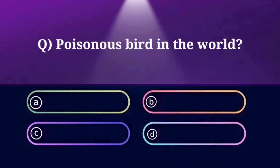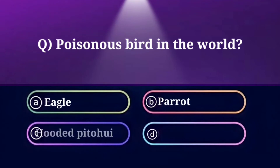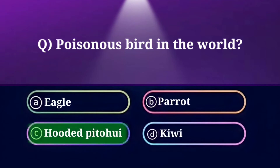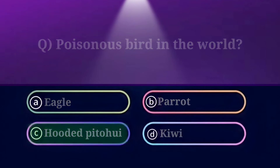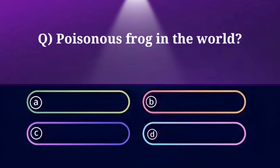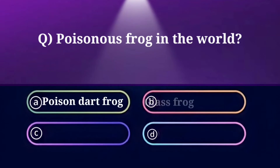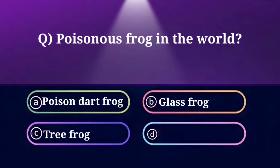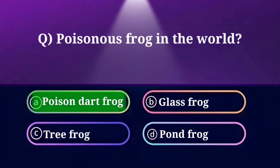Most poisonous bird in the world. Option A: Eagle, B: Parrot, C: Hooded Pitohui, D: Kiwi. And the answer is Hooded Pitohui. Most poisonous frog in the world. Option A: Poison Dart Frog, B: Glass Frog, C: Tree Frog, D: Pond Frog. And the answer is Poison Dart Frog.